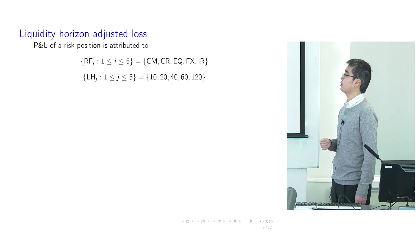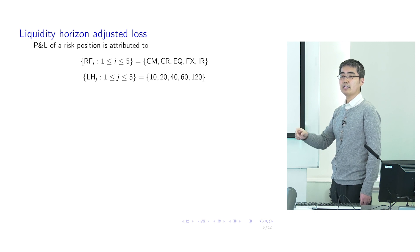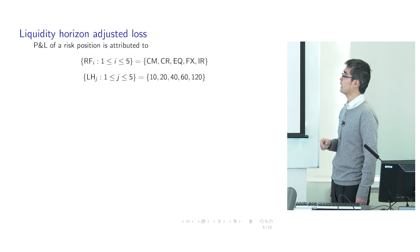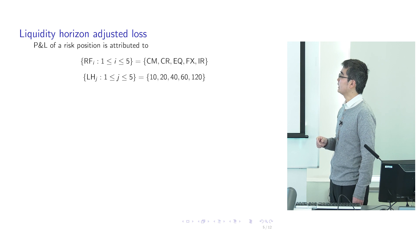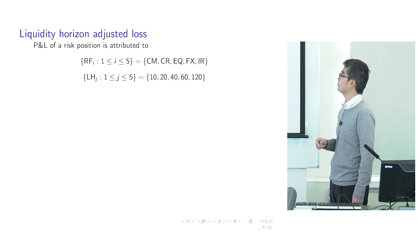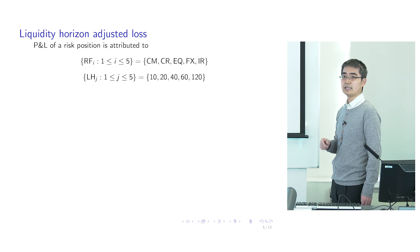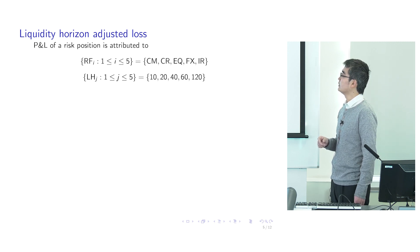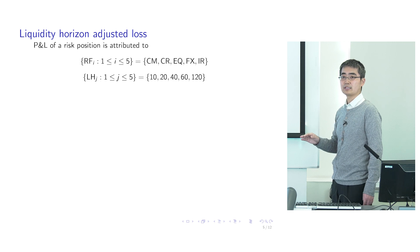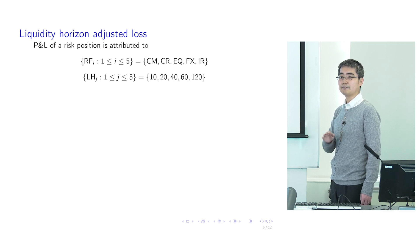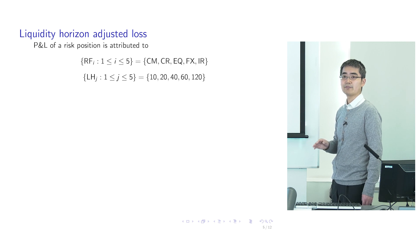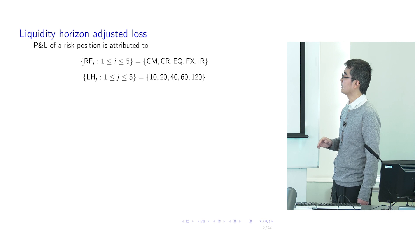Under the FRTB, the profit and loss for each risk position is first allocated to different risk factor classes and different liquidity horizons. Each risk factor is classified into one of five categories: commodity, credit risk, equity, fixed income, and interest rate. For each risk factor in each class, it is assigned a liquidity horizon from 10 days to 120 days. Therefore, you have five different risk factor and liquidity horizon buckets.